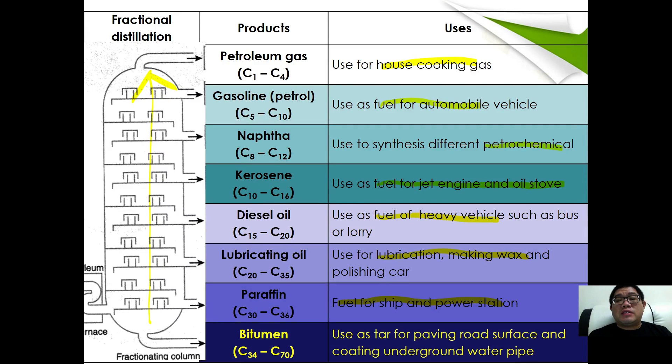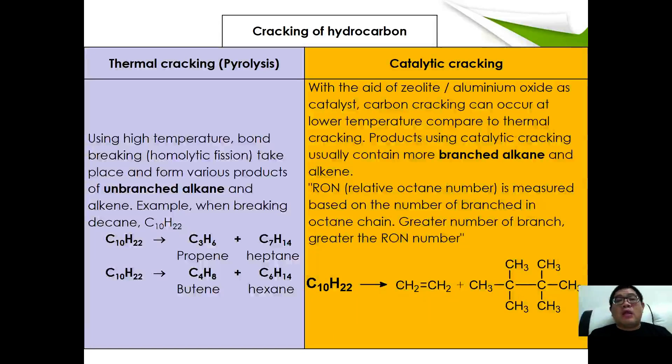Most of the time, especially the last two portions—paraffin and bitumen—have very limited usage, so they are further treated with another process called cracking. Hydrocarbons can be cracked via two methods: thermal cracking and catalytic cracking. Let's look at the differences between them.